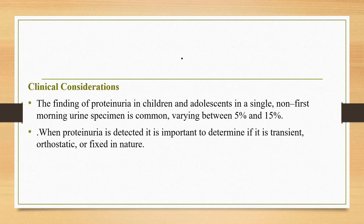Regarding clinical considerations, finding proteinuria in children and adolescents on a single non-first-morning urine specimen is common, occurring in up to 10–50% of cases. The prevalence of persistent proteinuria on repeated testing is much less common. The challenge is to differentiate the child with proteinuria related to renal disease from an otherwise healthy child with transient or other benign forms of proteinuria.